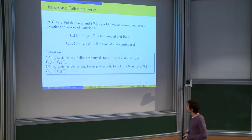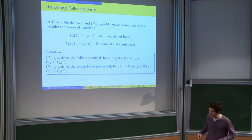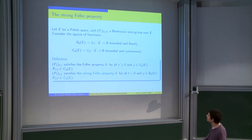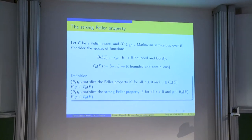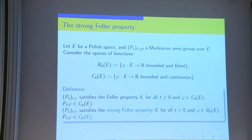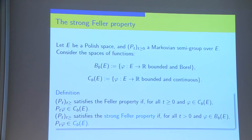The setting is the following. Consider any Polish space E and Markovian semi-group P_T over E. I will be considering two spaces of test functions: the space of Borel unbounded functions in E, which I've denoted by B_b, and the space of continuous unbounded functions in E.